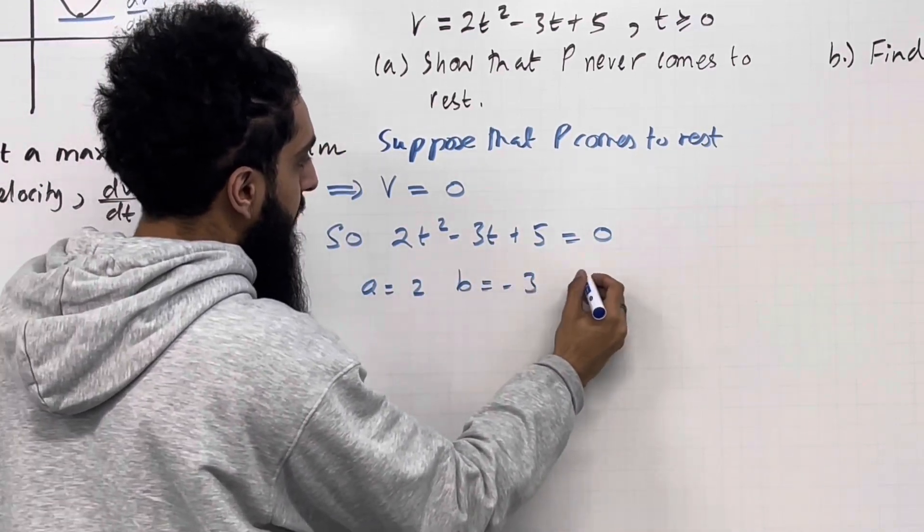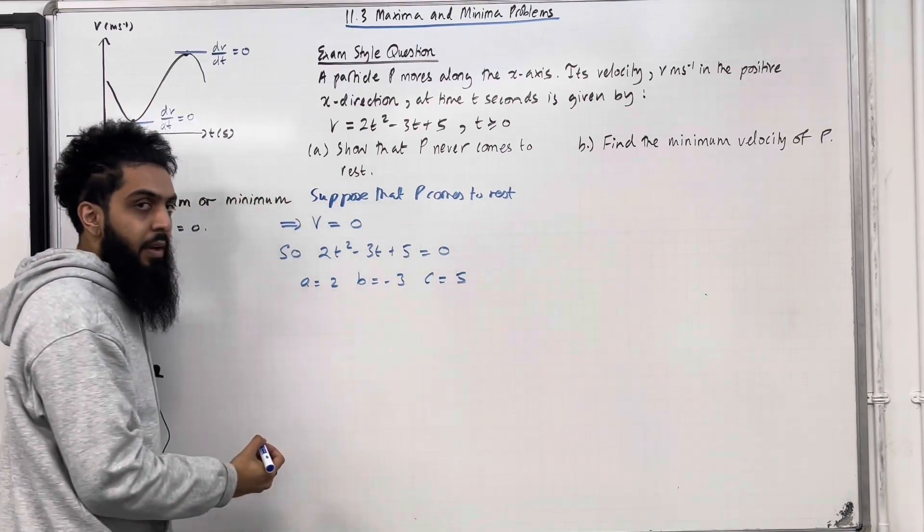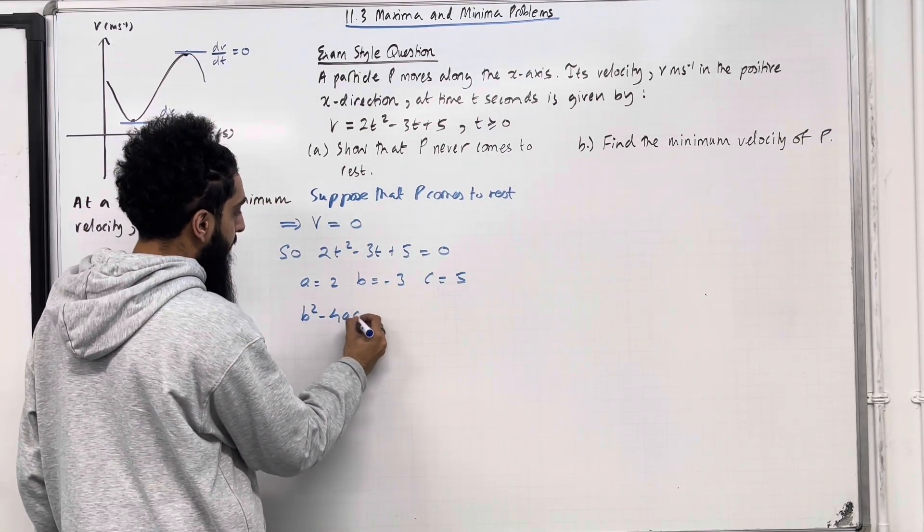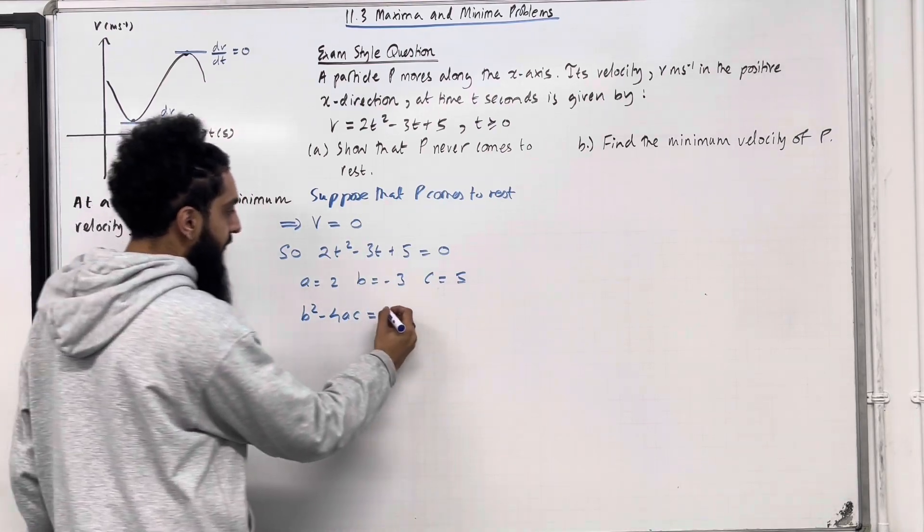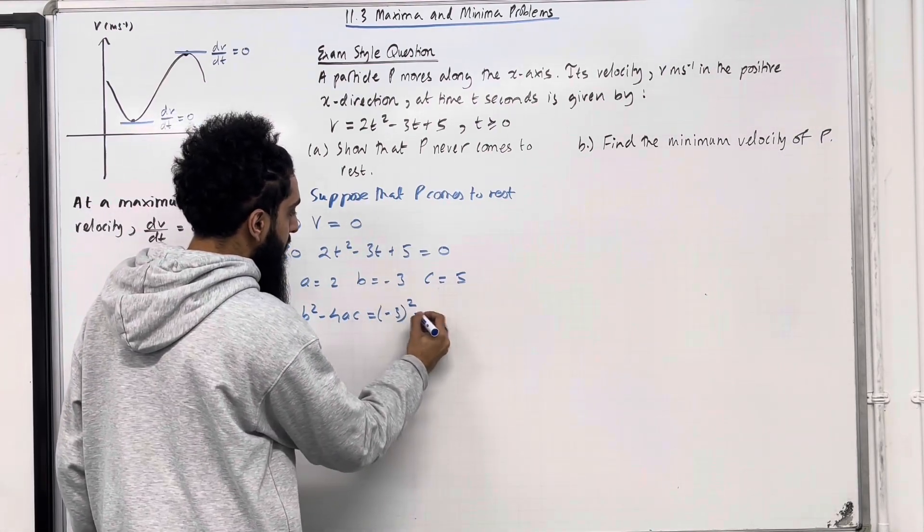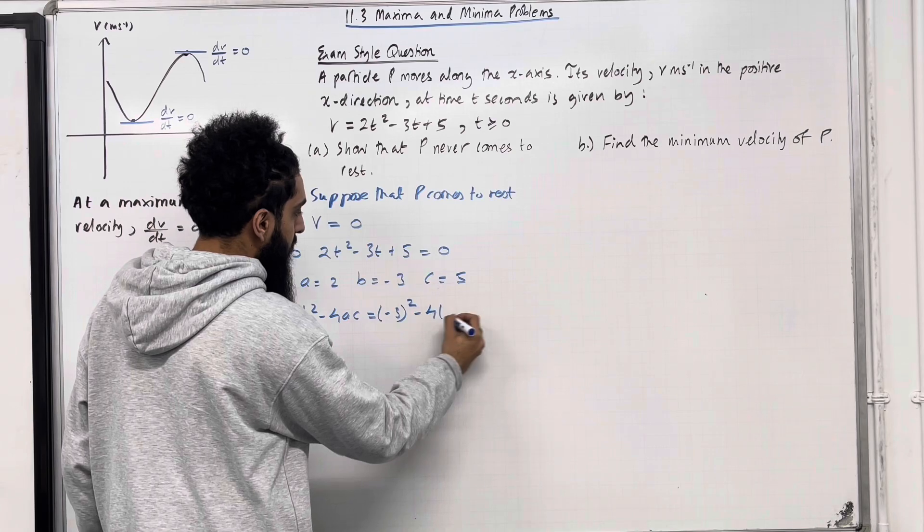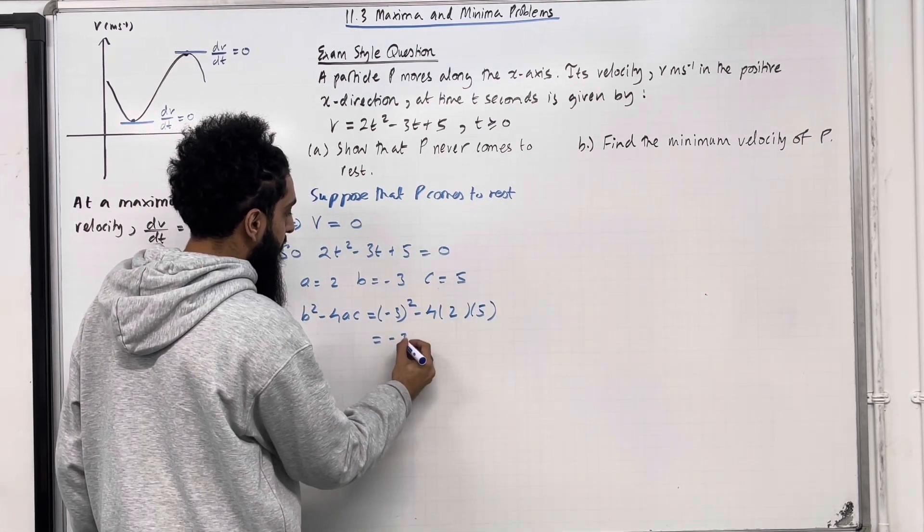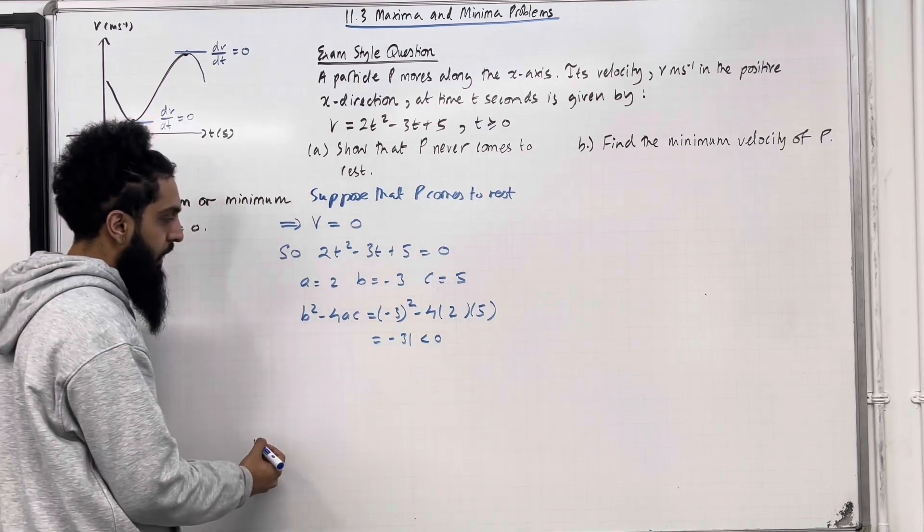The a equals 2, the b equals -3, and the c equals 5. Let's calculate the discriminant b² - 4ac. So we've got (-3)² - 4 × 2 × 5. This gives me -31, which is less than 0.